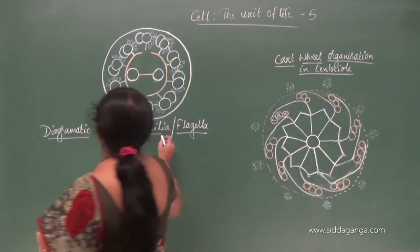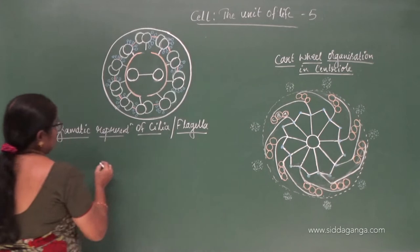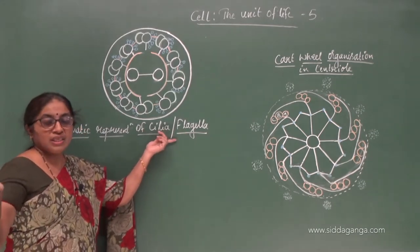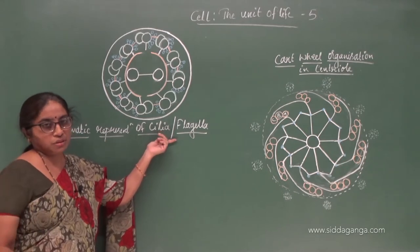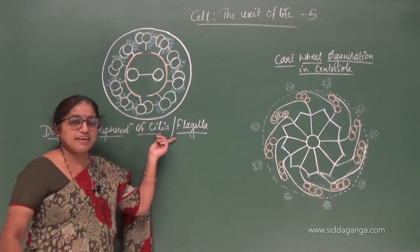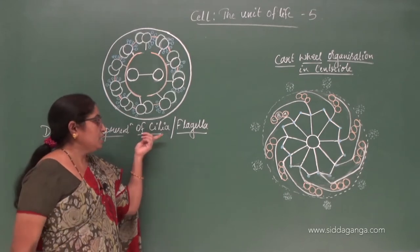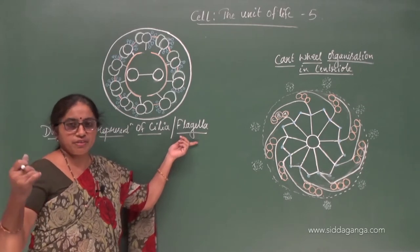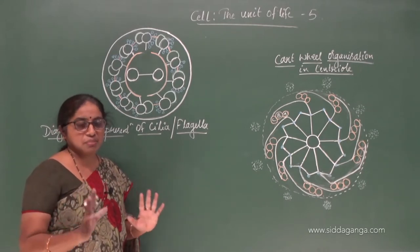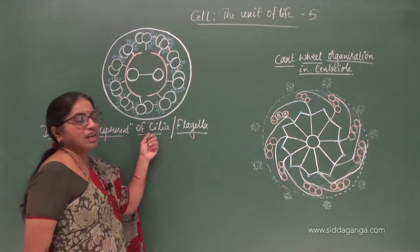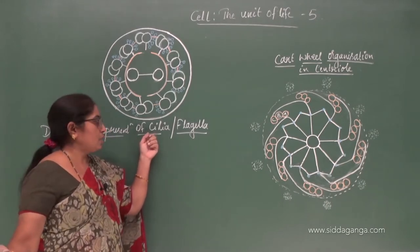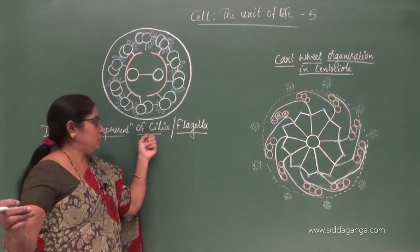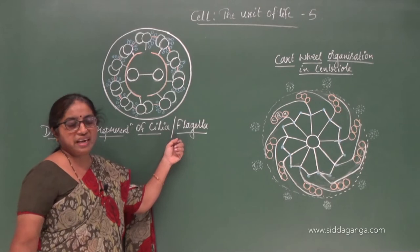Both cilia and flagella have a similar anatomical structure, but morphologically they may look very different. Cilia are hair-like and flagella are whip-like, but anatomically and physiologically they both have a similar internal structure. Cilia are hair-like structures which emerge from the cytoplasm very near to the cell membrane, and flagella are less in number — there may be one or two in a cell — whereas cilia are numerous.